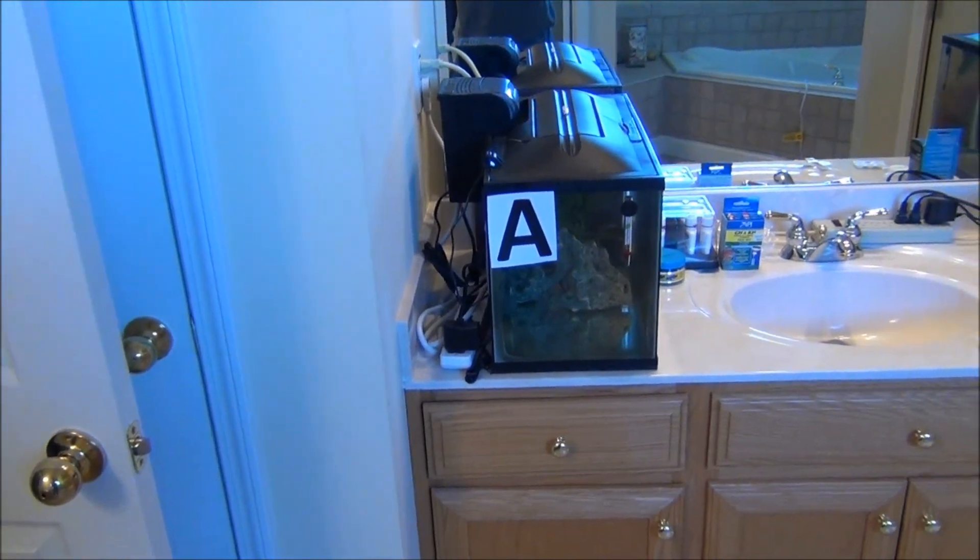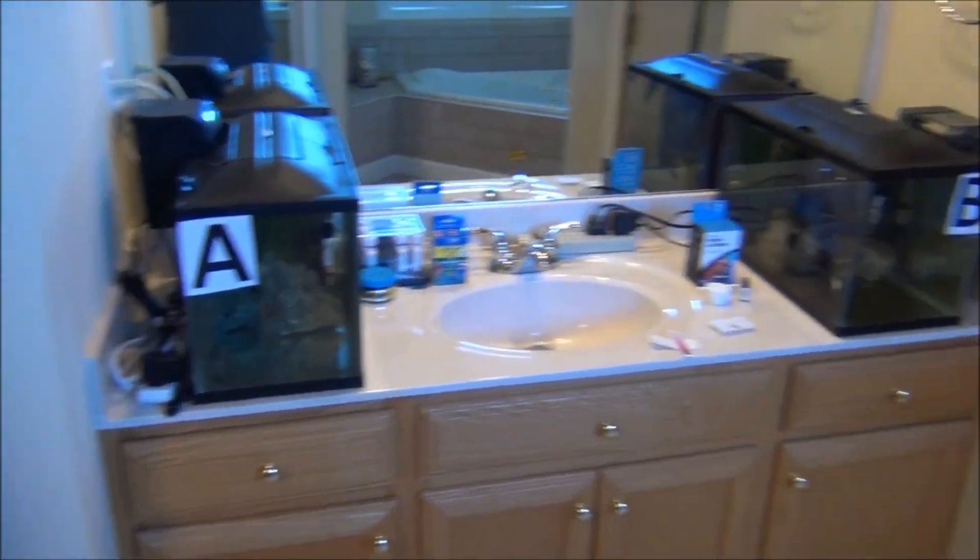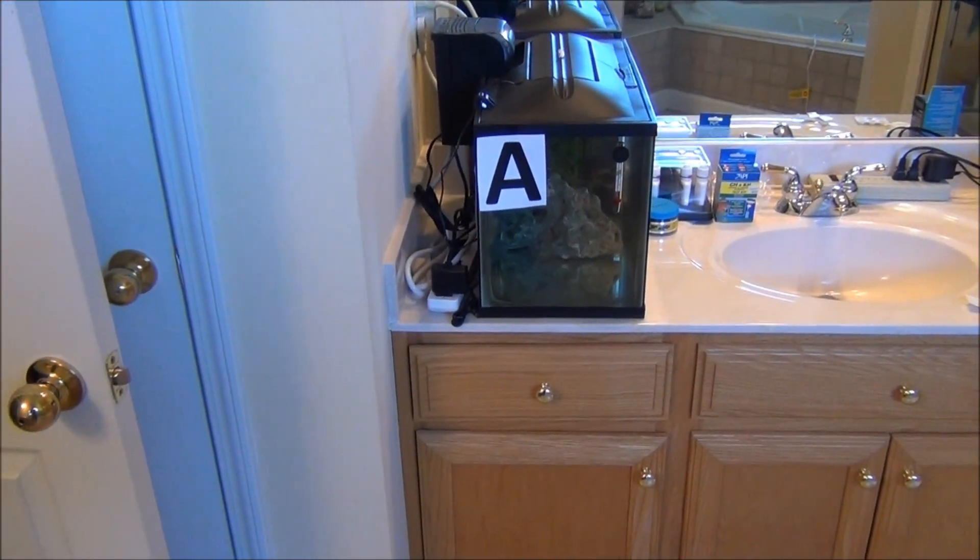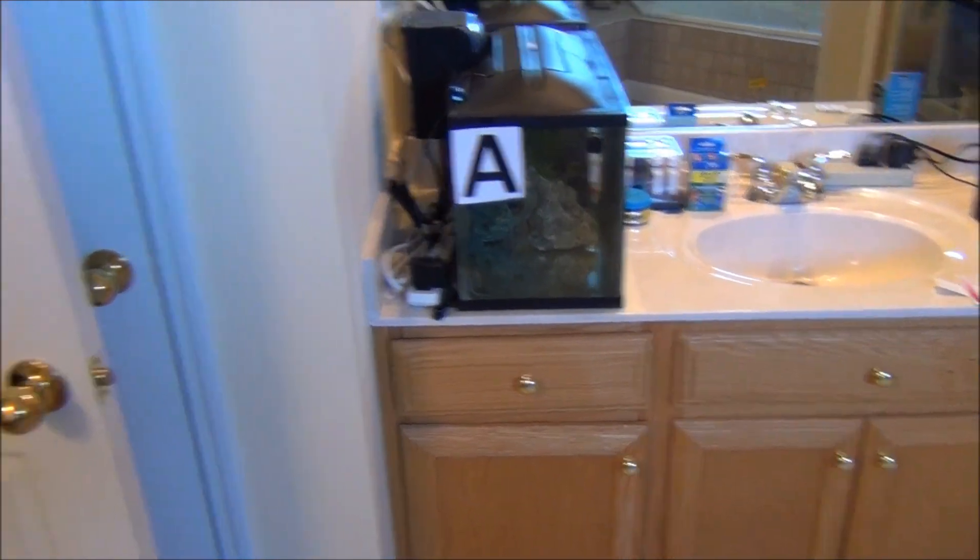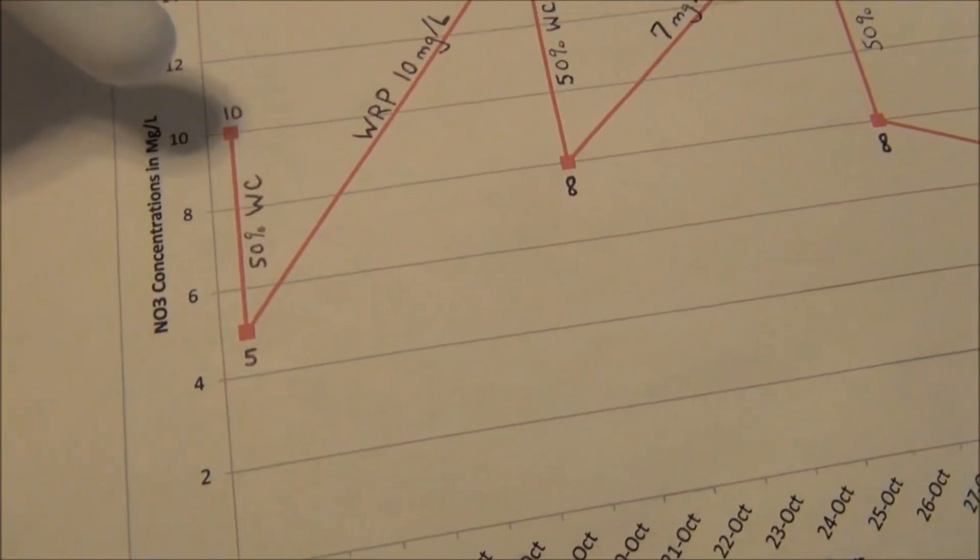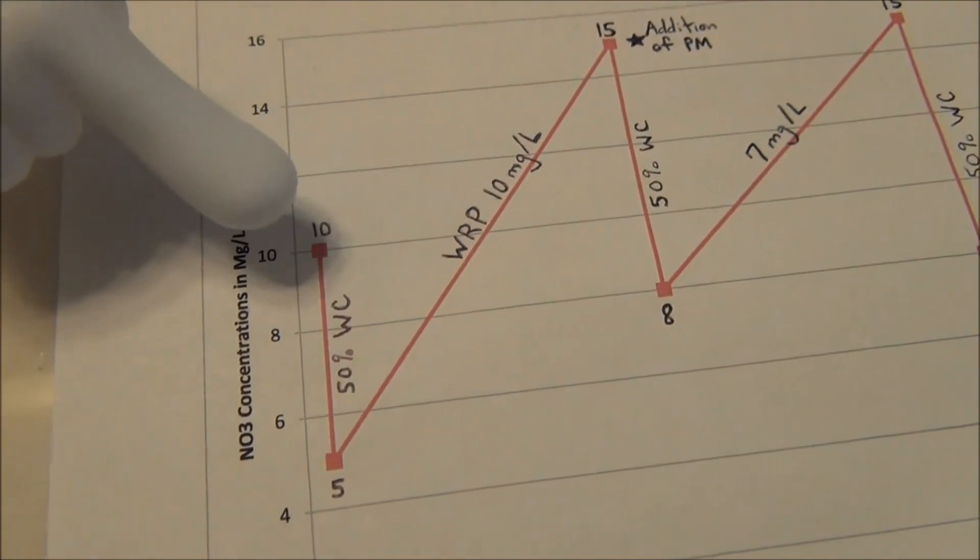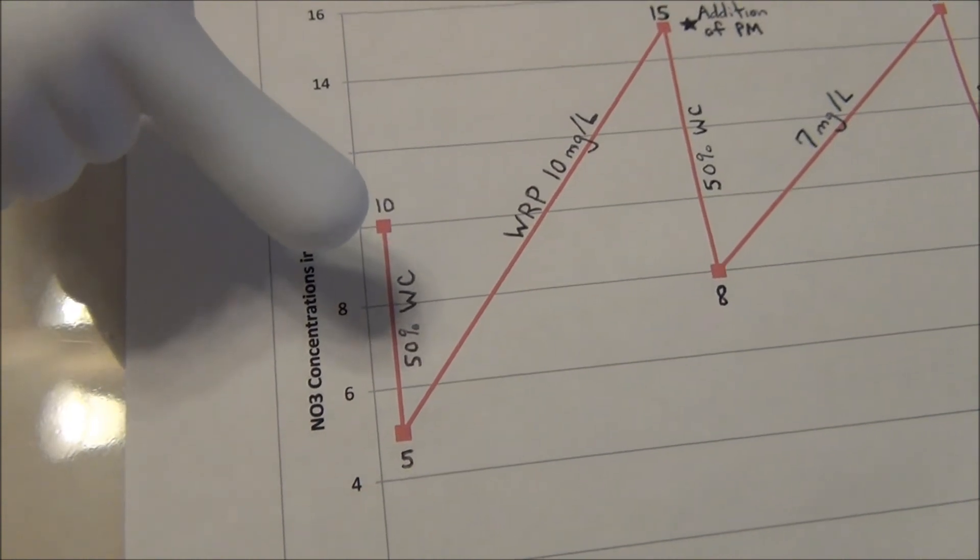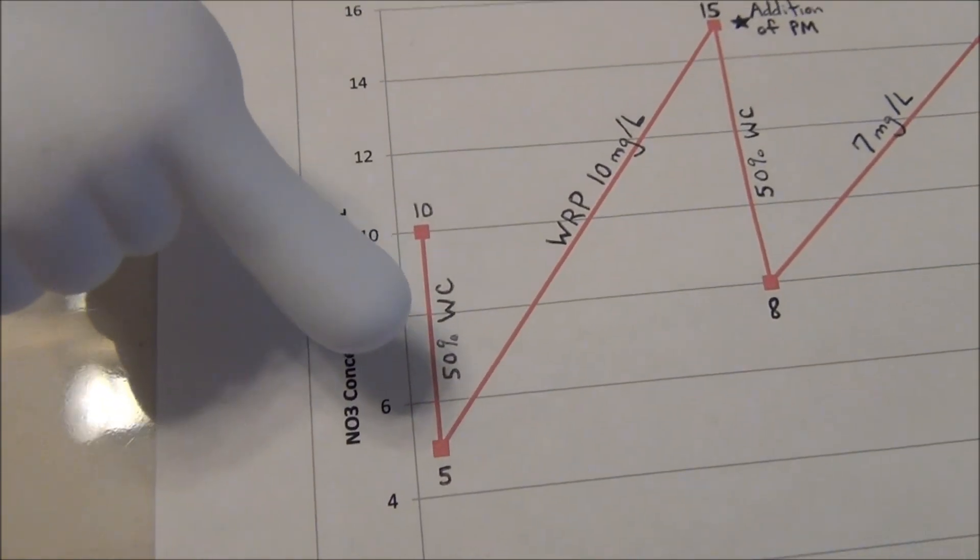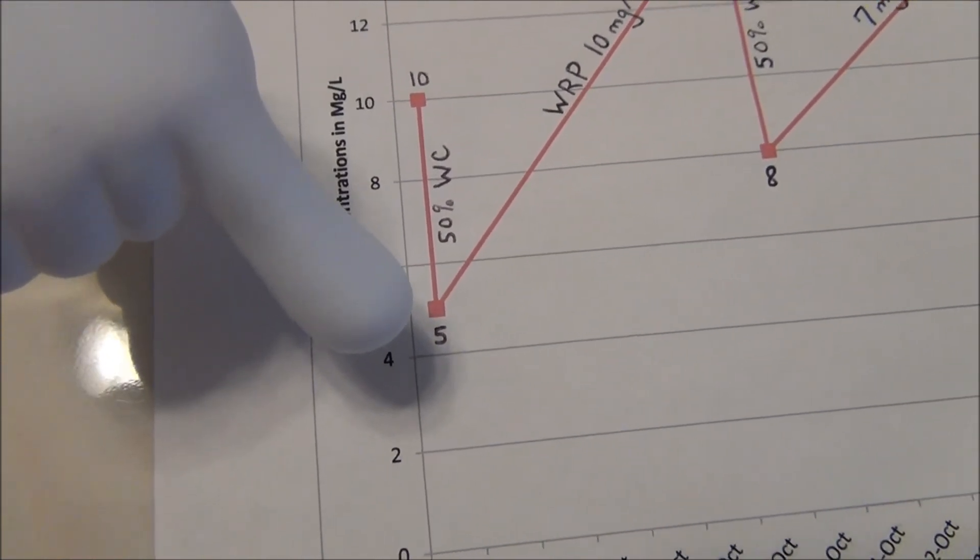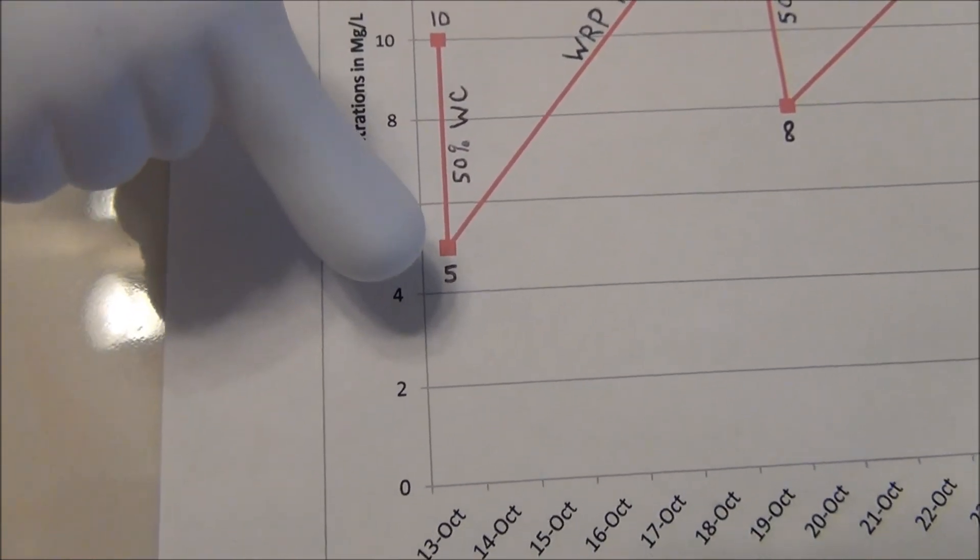Both aquariums had an initial nitrate concentration of 10 milligrams per liter. Actually, aquarium A had a concentration of 20 milligrams per liter, but in order to start with the same values, I did a 50% water change on aquarium A to get the concentrations to 10 milligrams per liter. After the first initial 50% water change, we started with 10 milligrams per liter in each aquarium on October 13th. Then I conducted another 50% water change on each aquarium, and we got the concentrations down to 5 milligrams per liter.